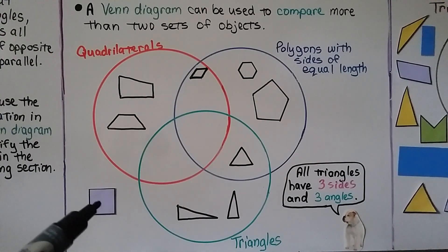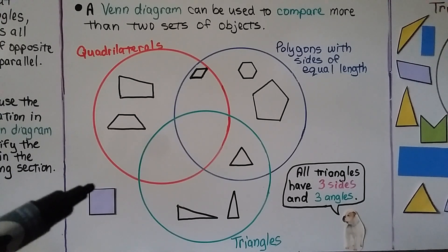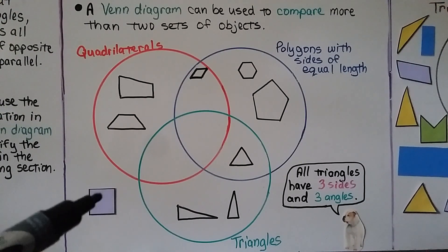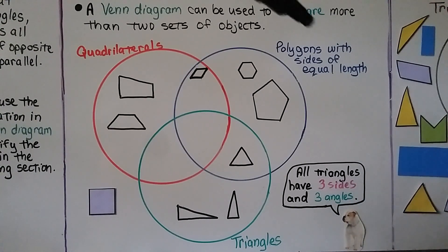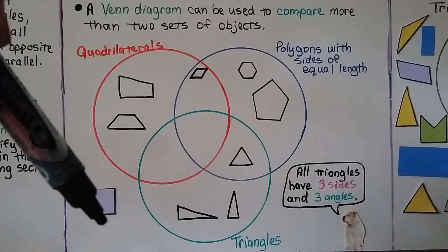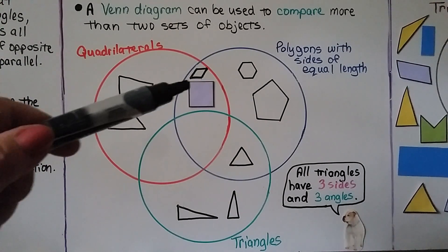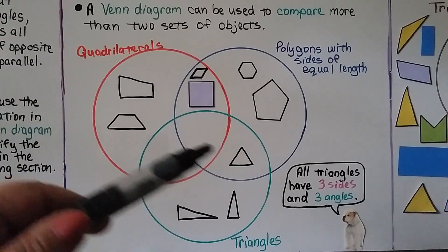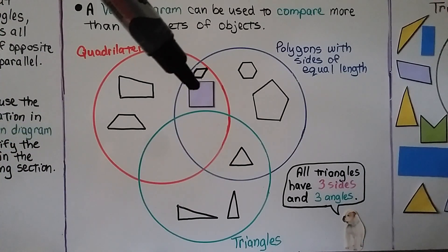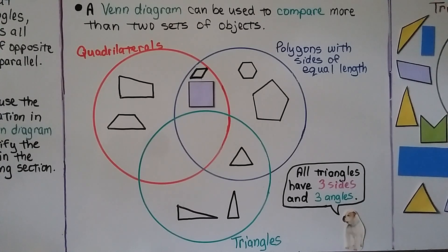So where would this square go in this Venn Diagram? It is a quadrilateral with four sides and four angles, and it is a polygon with sides of equal length — that's the definition of a square. But it's not a triangle. So it would go in the overlap between quadrilaterals and polygons with sides of equal length, away from the green circle because it's not a triangle.